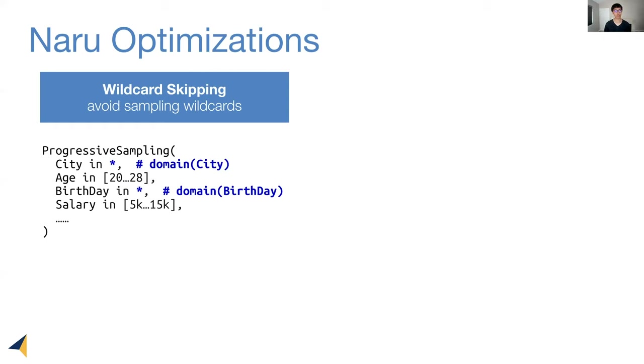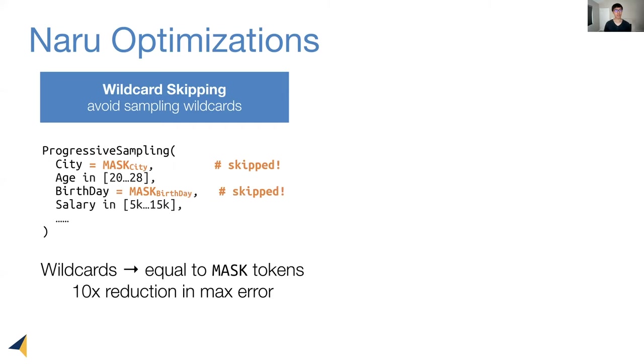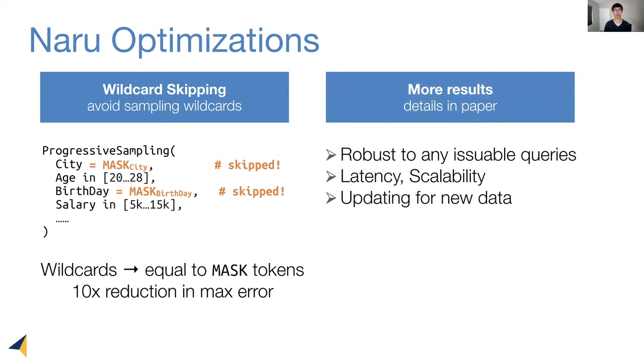We can naively support this by sampling through these huge domains. With wildcard skipping, we turn these range constraints into an equality constraint. For instance, city is made to be equal to this special mask token. And this allows us to skip sampling for the wildcard columns. This optimization is highly effective. It reduces the maximum estimation error by one order of magnitude. Our paper also contains more interesting results. Please check it out.